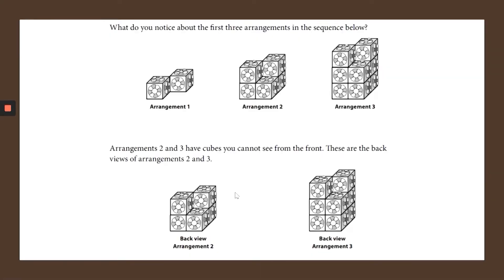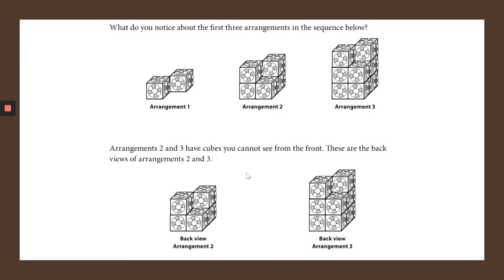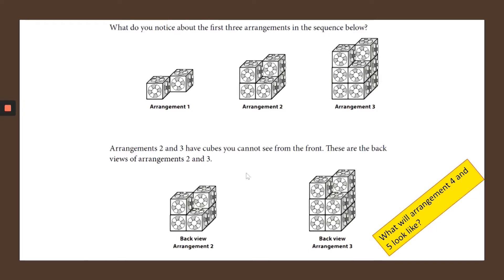First, I want you to take a look at these three arrangements of blocks. What do you notice about the first three arrangements in the sequence below? Here's sequence one, two, and three. Down here it shows you the back view of arrangement two and three, because arrangement two and three have cubes you can't see from the front. I'm going to have you discuss what you notice, and then answer this question: What will arrangement four and five look like, and how do you know? You can sketch it, write it, or talk through it with someone you are watching with.